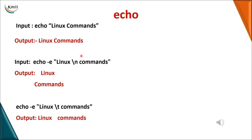For example, writing 'echo Linux commands' with no option prints 'Linux commands' on the monitor. When you use 'echo -e Linux\nCommands', the \n is a backslash character meaning you want the two words printed on separate lines — \n only works when -e is included. Without -e, 'echo Linux\nCommands' prints everything on a single line. For a horizontal tab between words, use \t as in 'echo -e Linux\tCommands'. To disable backslash characters, use -E.